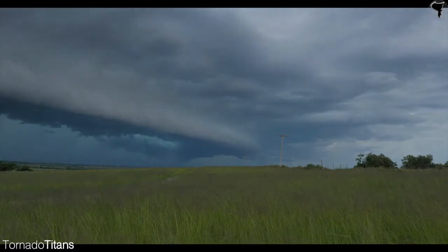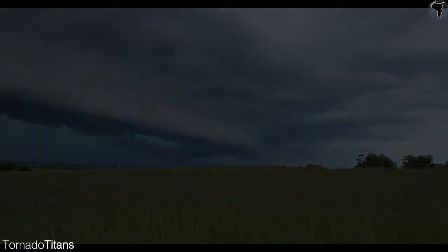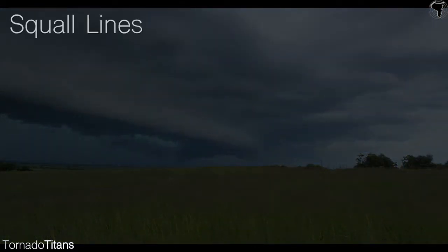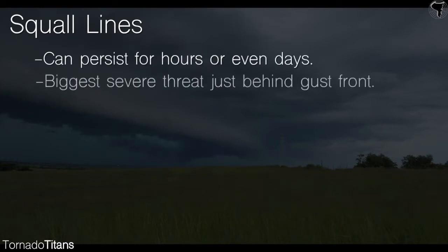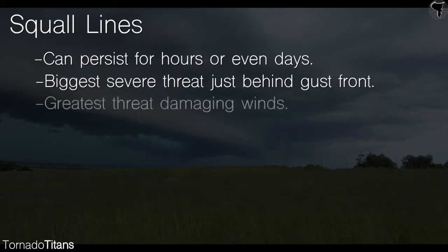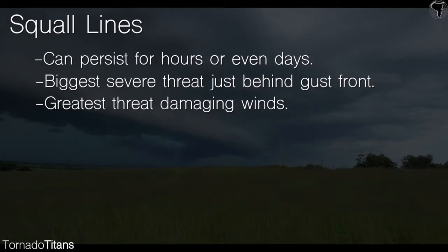Lines of storms can persist for hours and even days as they move east or south. A line of storms will see its biggest severe weather threats along and just behind the gust front. The main severe weather threat from squall lines is damaging winds, but large hail and even weak tornadoes are possible.